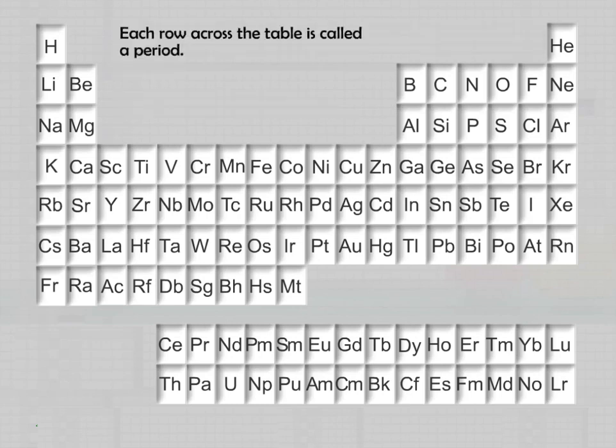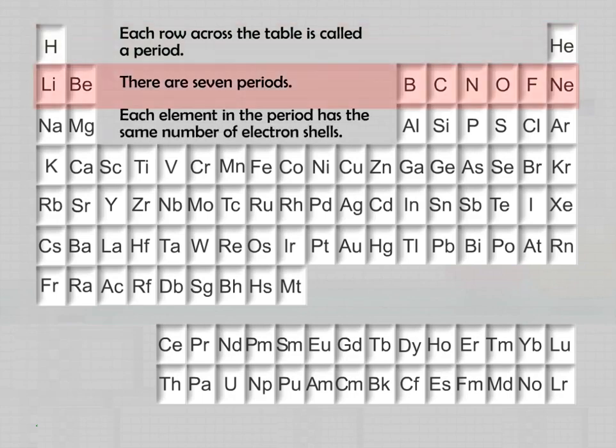Each row across the table is called a period. There are seven periods. Each element in the period has the same number of electron shells.